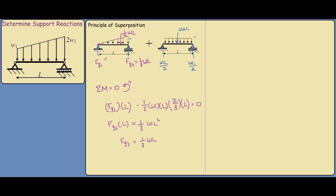Now we need to find Fy1. We can do this by the summation of forces in the y-direction, taking up as positive. So this would be Fy1 plus Fy2 — which is one-third WL — minus the point load, which is half WL, and we equate this to zero. Solving this equation, we get Fy1 equals one-sixth WL.